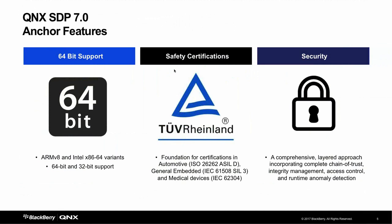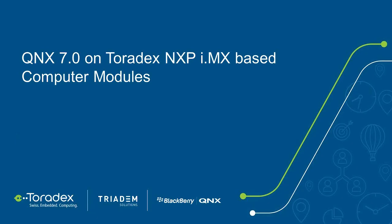As a testament to our focus on safety and security, we recently released QNX version 7. Its three key anchor features were: true 64-bit support for ARM and Intel system on chips; refreshed safety certifications for ISO 26262 ASIL-D for automotive, IEC 61508 SIL3 for industrial, and IEC 62304 for medical; and greatly enhanced security — we added secure boot, a layered approach with complete chain of trust, integrity management, access control lists, runtime anomaly detection, and a wide number of other features.